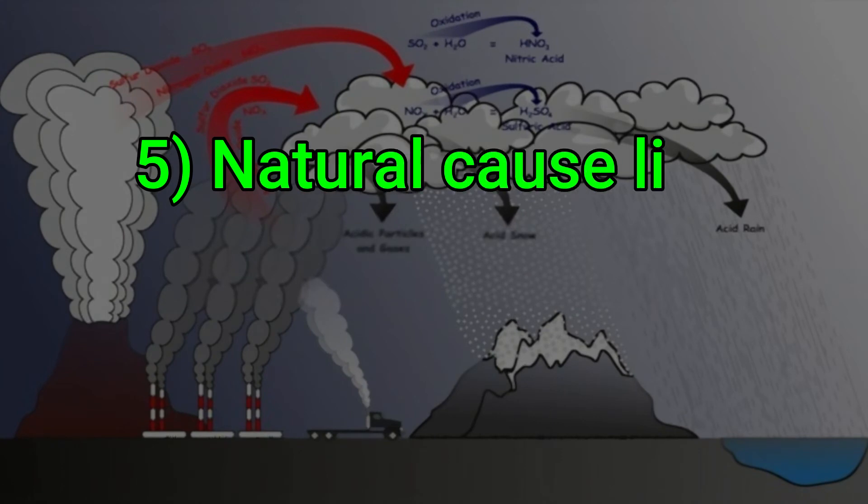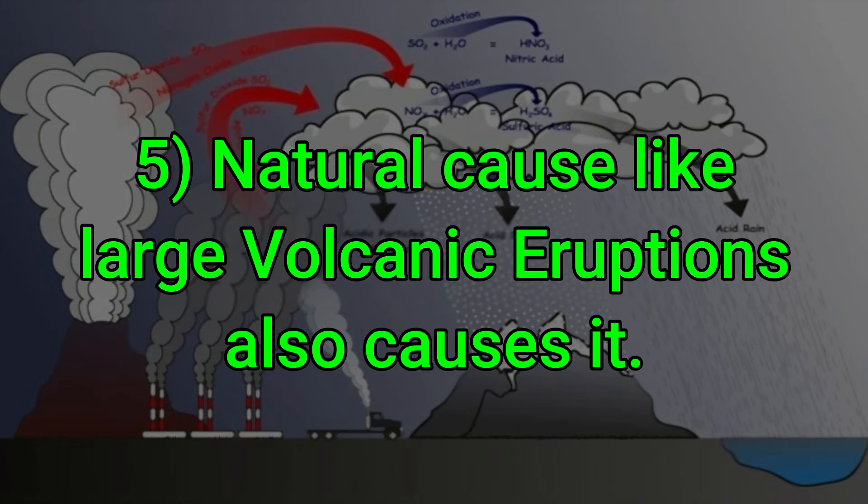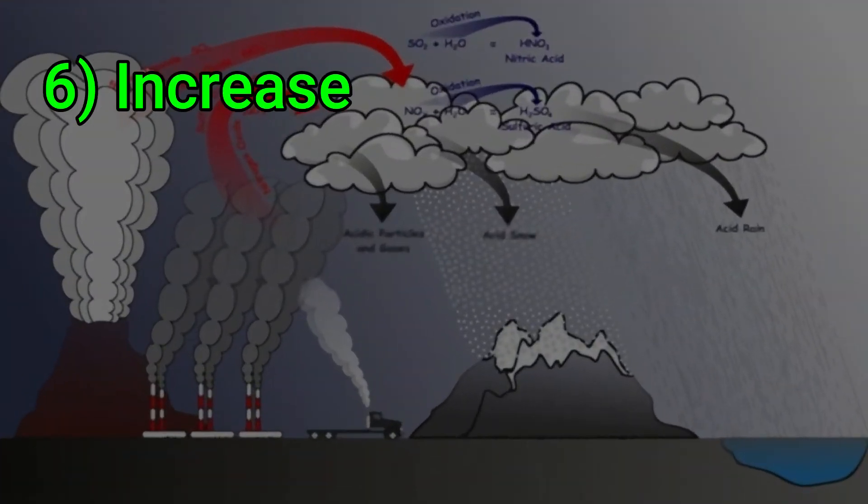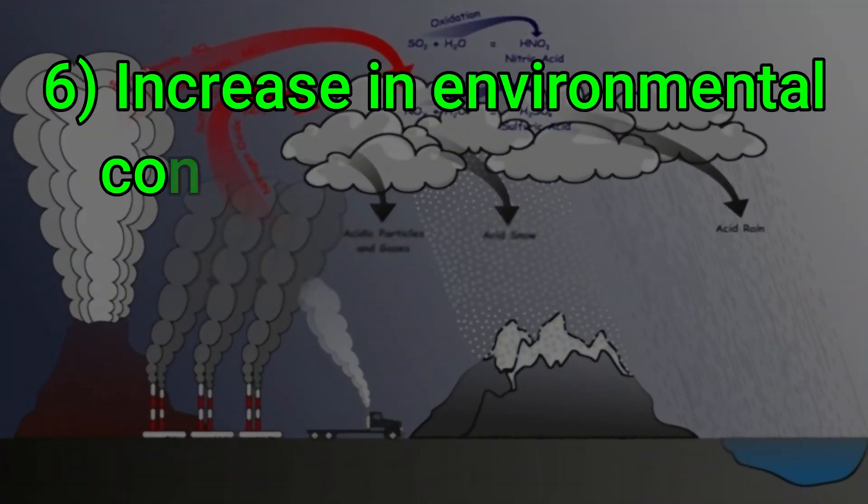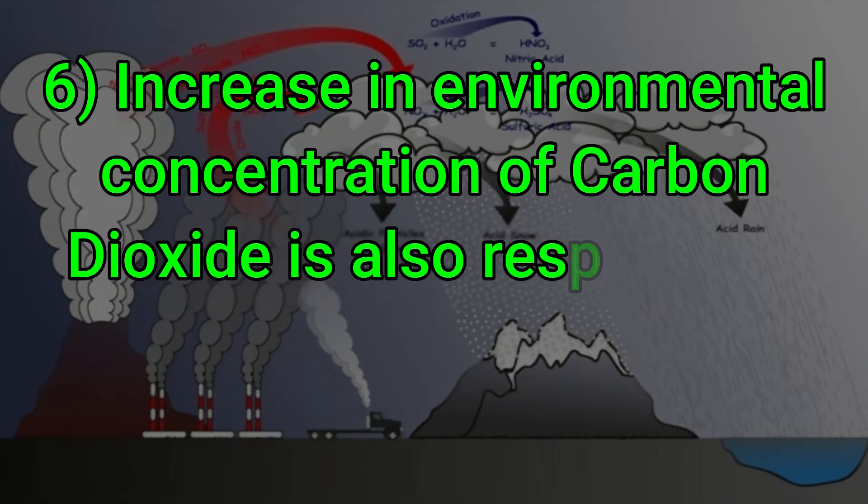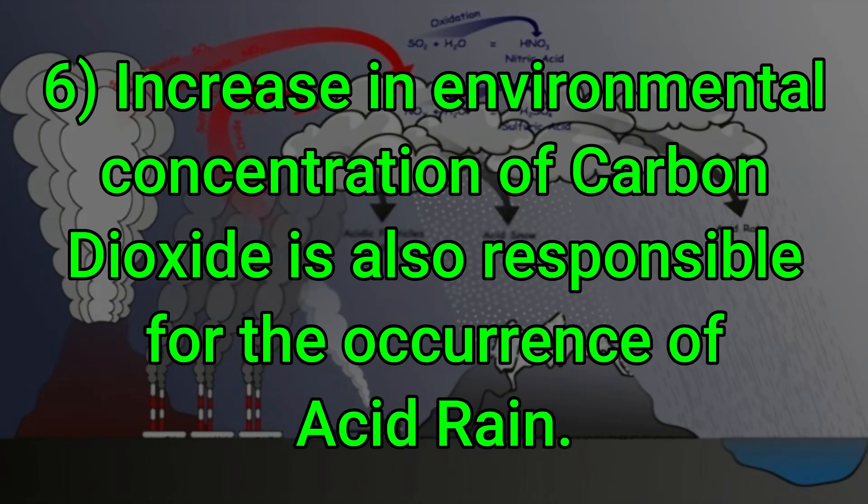Natural causes like large volcanic eruptions also cause it. Increase in environmental concentration of carbon dioxide is also responsible for the occurrence of acid rain.